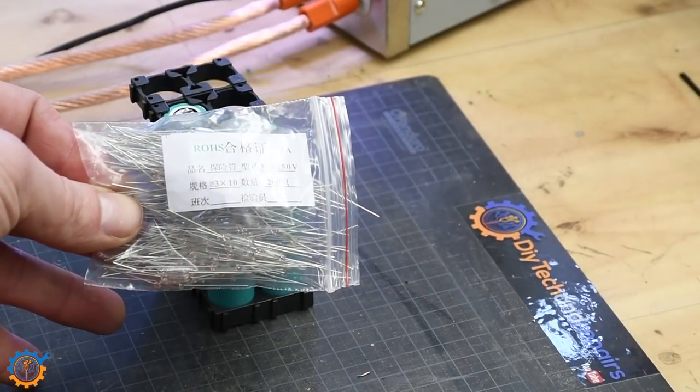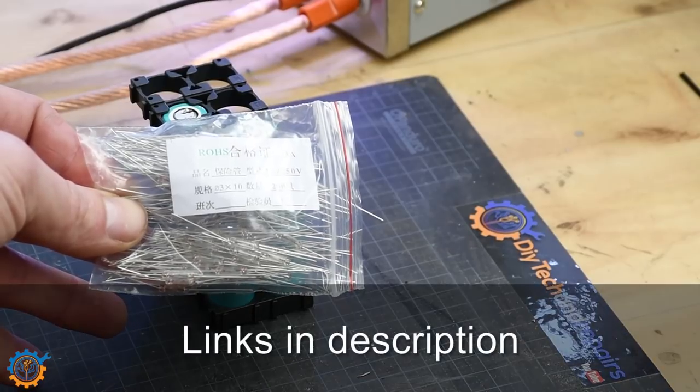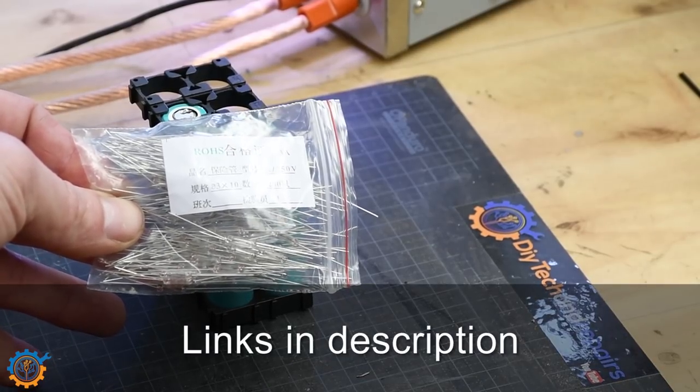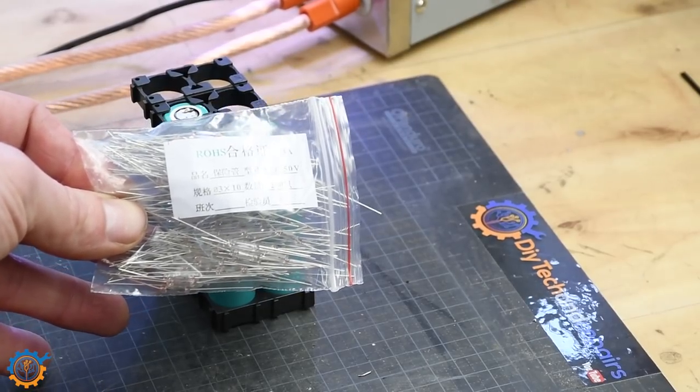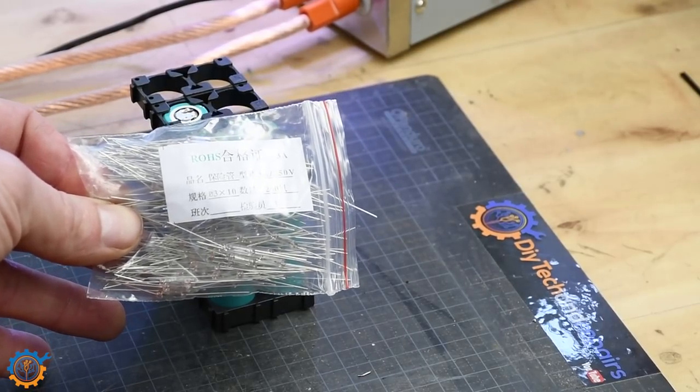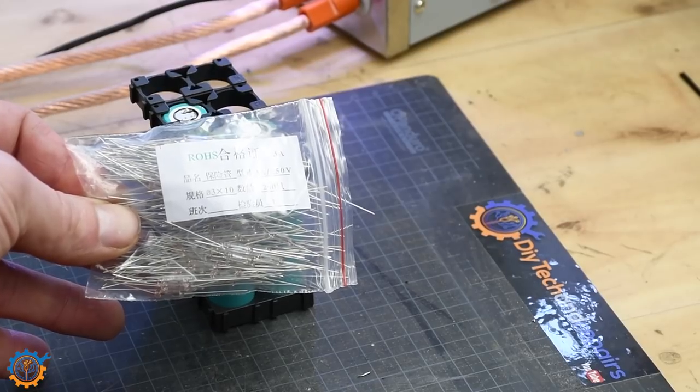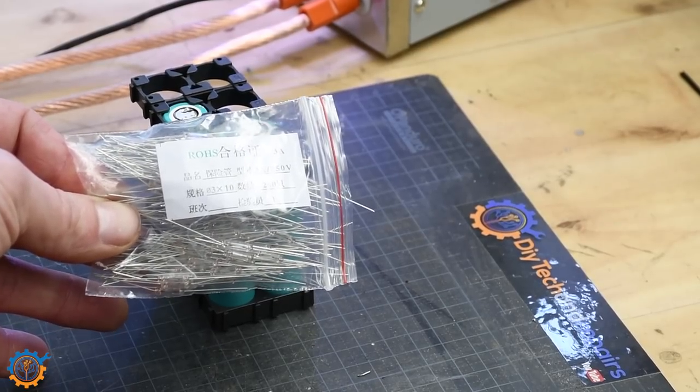I'm using this type of fuses here. They're 3x10mm and they're 3 amp rated. I don't think you should go too low on the current because it's not about protecting one cell from the others, it's about the other cells going into one cell.